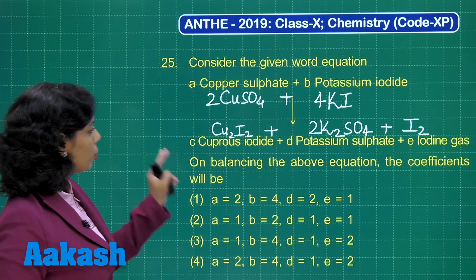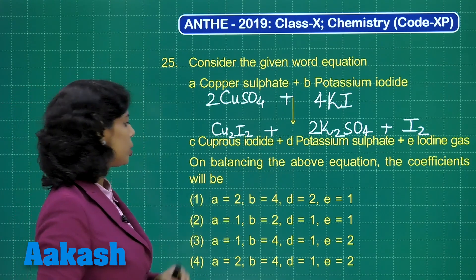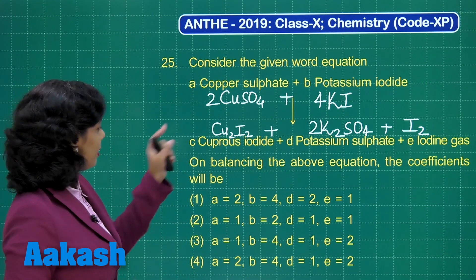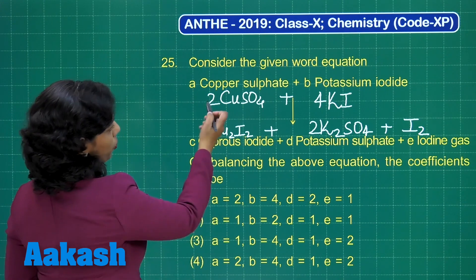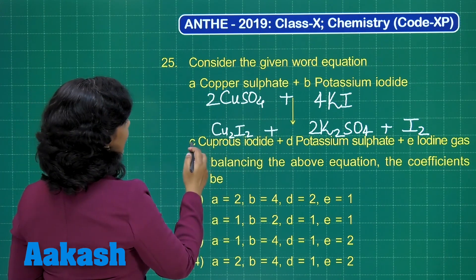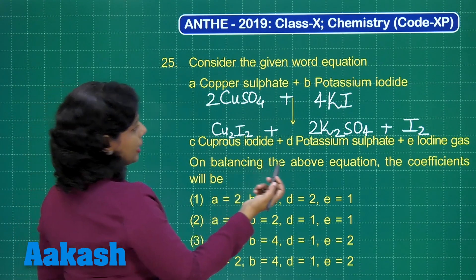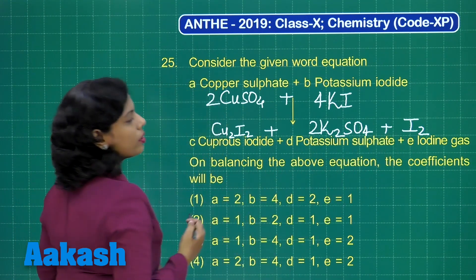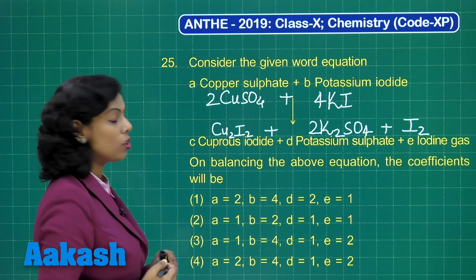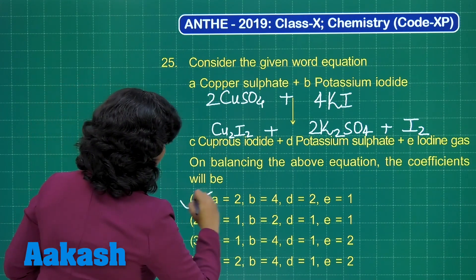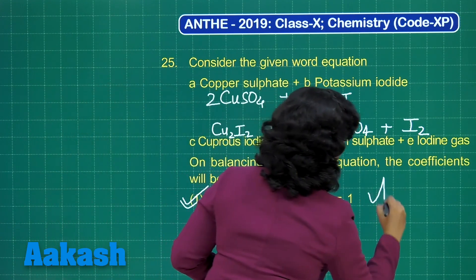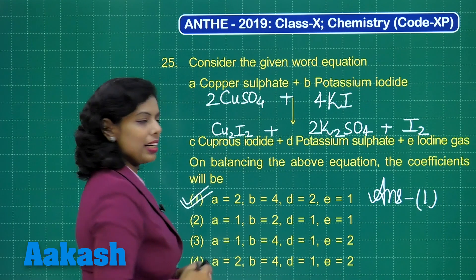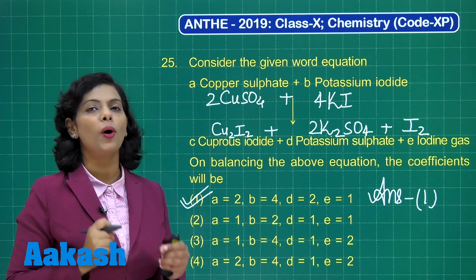On the basis of that, you need to identify the coefficients as per the question. We have already identified them: A is 2, B is 4, D is 2, and E is 1. We can easily choose option 1 as the correct answer. I hope it is clear — very simple question, just based on balancing.